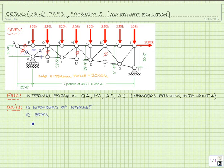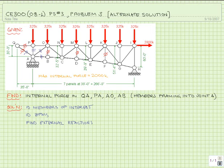Now that we have identified our zero force members, it is time to find the external reactions. Before we do, we should consider which reactions we absolutely need. Following our truss cutting rules, we would want to cut through all of our members of interest and cut through the entire truss, which we have done in this particular cut. We have isolated a single joint — joint A — so the only reaction we need is the reaction at joint A for this particular part of the problem.